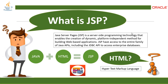Java Server Pages is a server-side programming technology that enables the creation of dynamic, platform-independent method for building web-based applications. JSP has access to the entire family of Java APIs, including the JDBC API to access Enterprise Databases and many more libraries. In simple words, we can say Java plus HTML equals JSP.